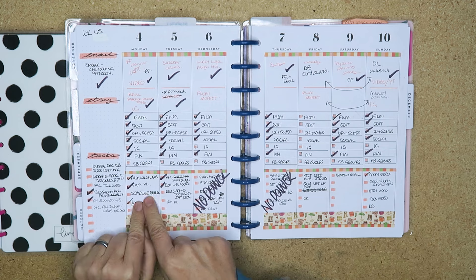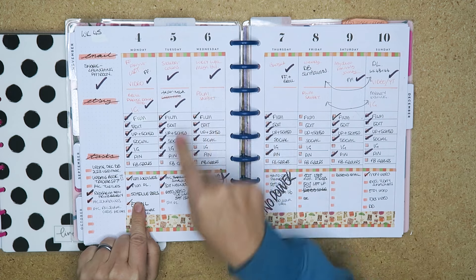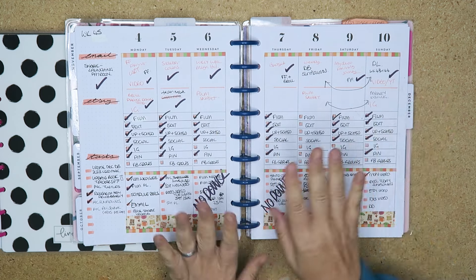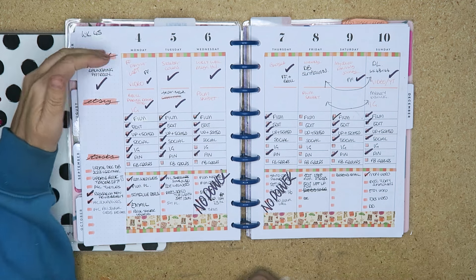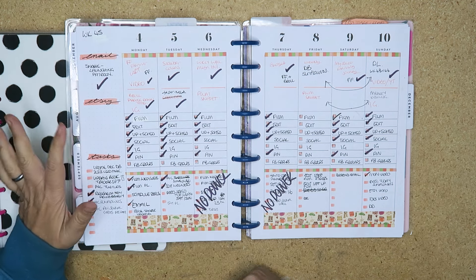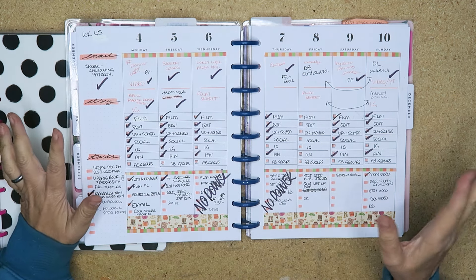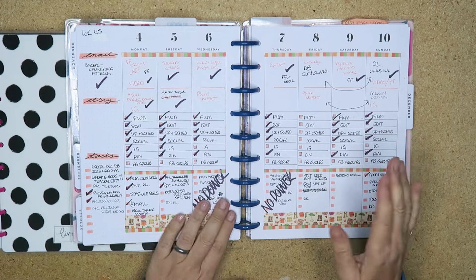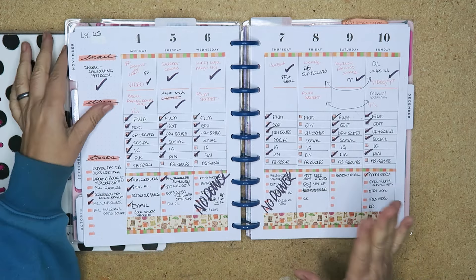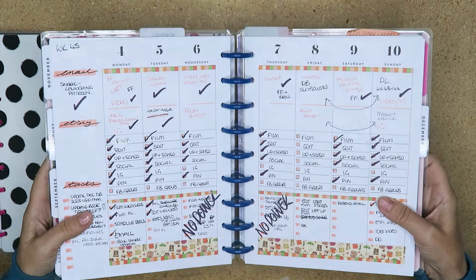It's always working forward. And then in the sidebar I've got email, Etsy, tasks, and now I've got Patreon. So that's what I do. And all I've done is just use washi and a couple of little stickers sometimes to decorate it.